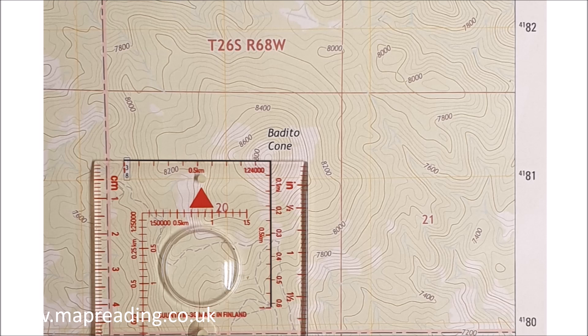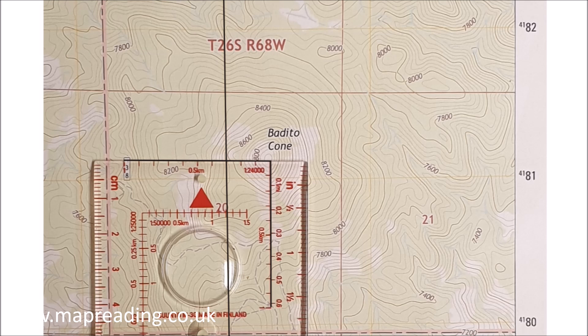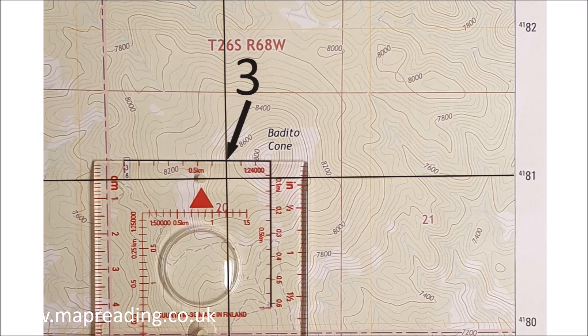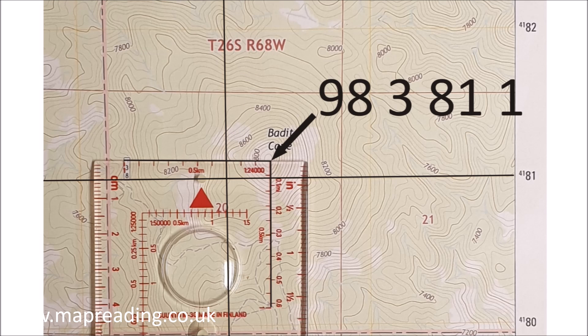Let's try the American map first. As this is a 1 to 24,000 map, I'm going to use the top right-hand corner of the 1:24K scale and put it onto my position. As always, it's along the corridor then up the stairs. For the vertical line or easting, we follow upwards and see the 98 line, then read the base plate number closest to it: 3. Then we do the same with the 81 horizontal line and we can see it's just on number 1. So the UTM coordinate for my position on the summit of Bedito Cone is 98, 3, 81, 1.